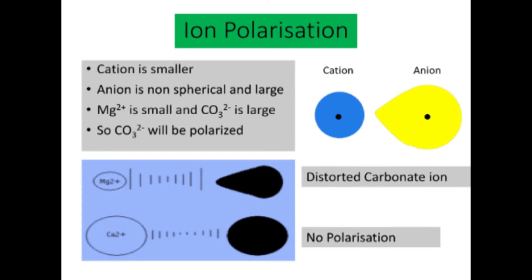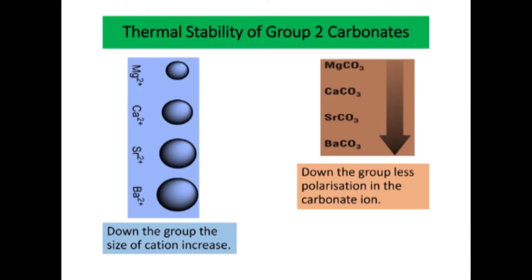For magnesium carbonate, the carbonate ion is distorted or polarized due to the smaller size and greater charge density of the Mg²⁺ ion. But for Ca²⁺ ion, it is larger with smaller charge density, so there is no distortion in the carbonate ion.